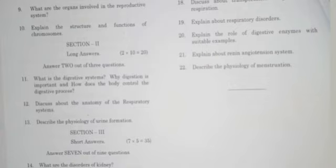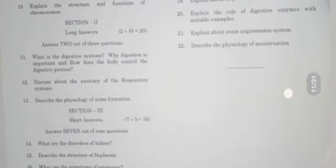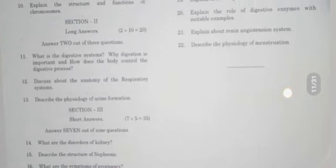What is the digestive system? Why is digestion important and how does the body control the digestive process? Definitely digestive system starting from buccal cavity ending at anus, work and represent. Discuss about the anatomy of the respiratory system and describe the physiology of urine formation. So for urine formation, you need nephron diagram which is important. And what are the disorders of kidney? Describe the structures of nephron. What are the symptoms of pregnancy? What is gene and explain their role? Explain about respiratory disorders.